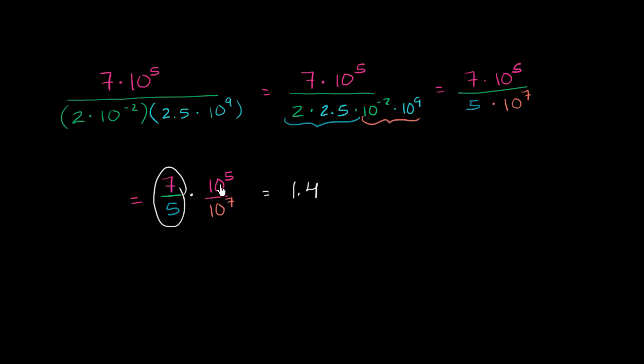Or you say, hey, look, I'm dividing this by this. We have the same base. We can subtract exponents. So it's going to be 10 to the 5 minus 7, which is 10 to the negative 2. So this part right over here is going to simplify to times 10 to the negative 2.